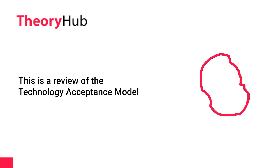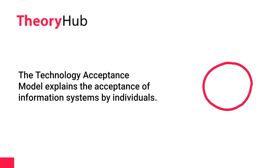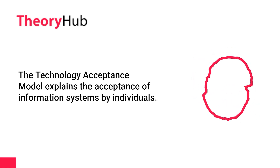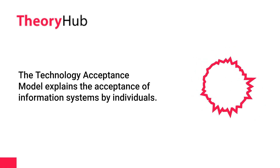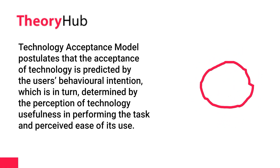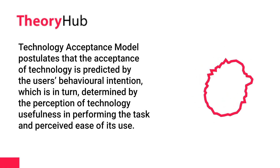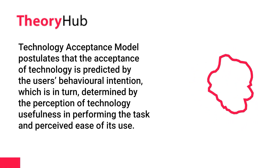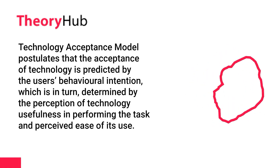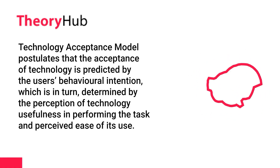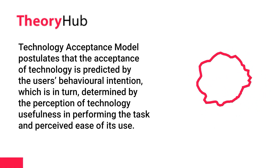This is a review of the Technology Acceptance Model. The Technology Acceptance Model explains the acceptance of information systems by individuals. It postulates that the acceptance of technology is predicted by the user's behavioral intention, which is in turn determined by the perception of technology usefulness in performing the task and perceived ease of its use.